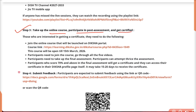Steps one, two, and four are not required. What you need to do is join the course on the Diksha portal using the provided link — it is open from September 15 until March next year. Join the course, go through all five videos, then take the final assessment. If your score is 70% or above, you will get a certificate.